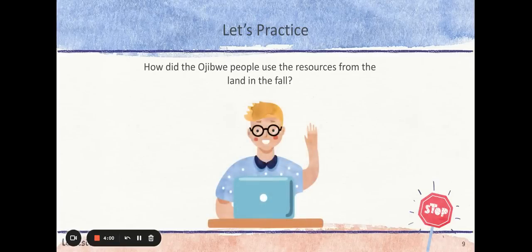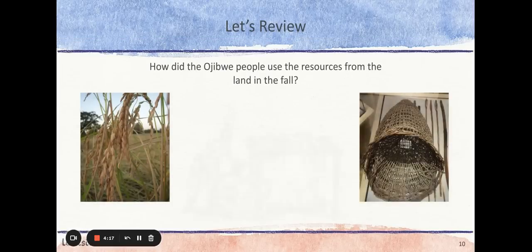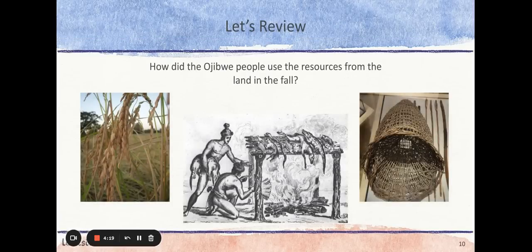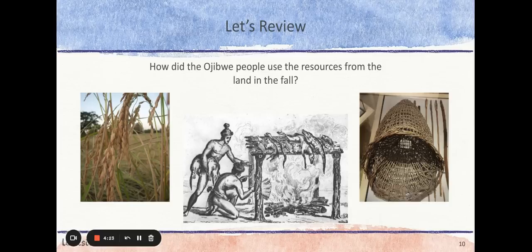Now you are ready to think about how the Ojibwe people met their needs during the fall season. Pause this video to record your answers on your handout at the second stop sign, then hit play when you are ready to continue. Some of the ways the Ojibwe tribe survived off of the land during the fall included growing wheat to store, making traps and nets for fishing and hunting, and preserving many foods to prepare for the winter.